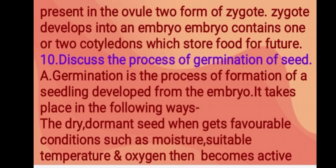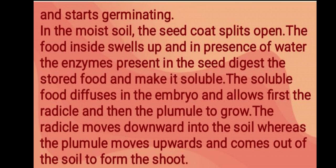The next question relates to the process of germination of a seed. Germination is the process of formation of a seedling developed from the embryo. The dry dormant seed, when it gets favorable conditions such as moisture, suitable temperature, and oxygen, becomes active and starts germinating. In moist soil, the seed coat first splits open, the food inside swells up, and in the presence of water the enzymes present in the seed digest the stored food and make it soluble.